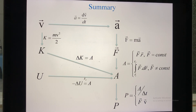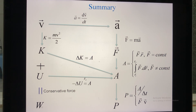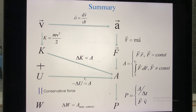To conclude this section: if you sum the kinetic energy and potential energy in a system that contains only conservative forces, you have mechanical energy. If the system contains non-conservative forces, the change of mechanical energy equals the work due to non-conservative forces. If the system contains only conservative forces, mechanical energy is conserved — meaning at any position, kinetic and potential energy can change, but the total mechanical energy remains constant.